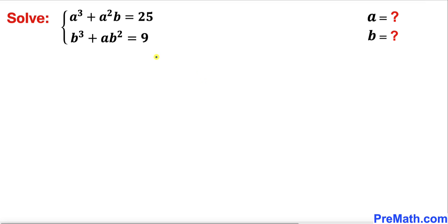Welcome to Pre-Math. In this video we are going to solve this given system of equations: a³ + a²b = 25 and b³ + ab² = 9.